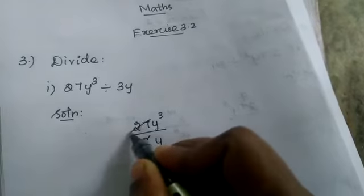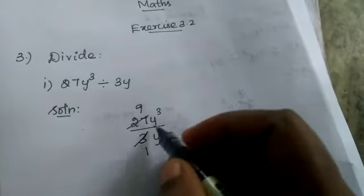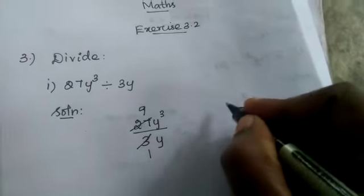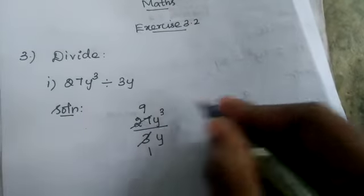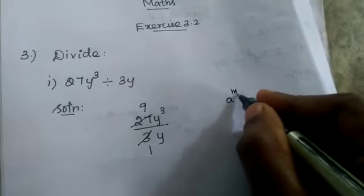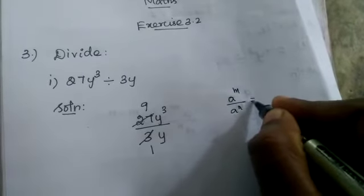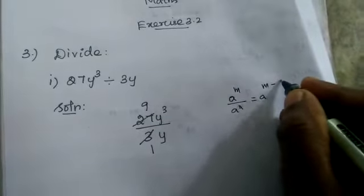27 divided by 3 is 9. Now we want to divide the variables. If the base is same we can subtract the powers. We know the formula: a^m divided by a^n equal to a^(m-n).